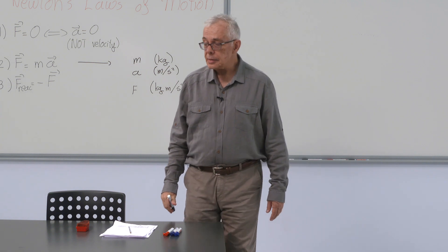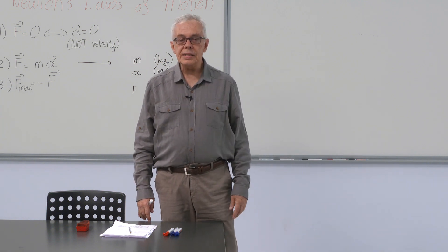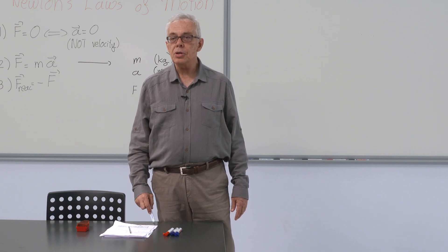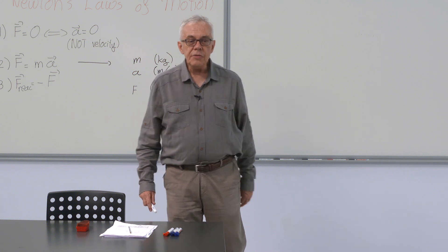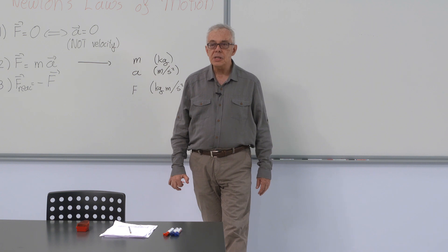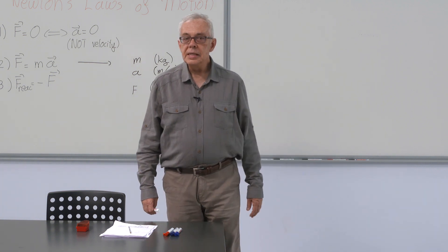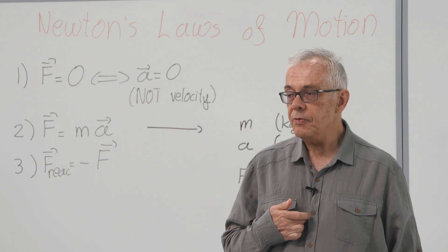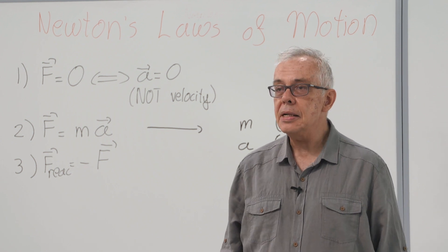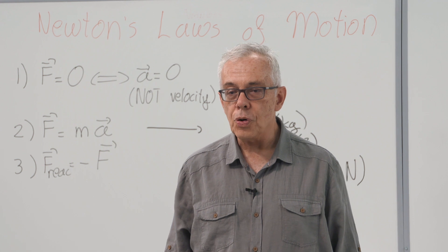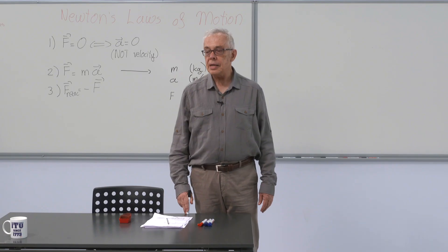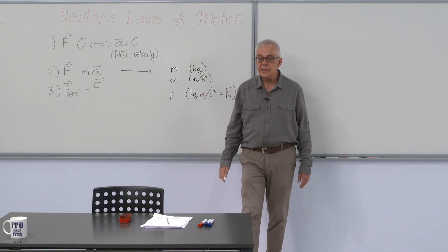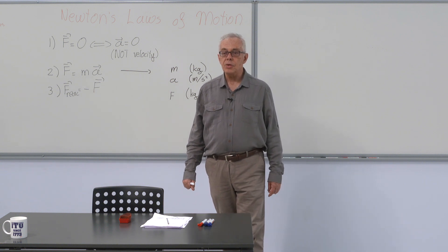One Newton is the force needed to accelerate one kilogram mass by one meter per second square. If you remember that gravitational acceleration is about 10 meters per second square. The weight of a one kilogram object is 10 Newtons. Weight is a force, the gravitational force, on an object. And weight is the force needed to give it this acceleration of gravity.